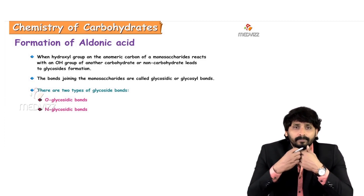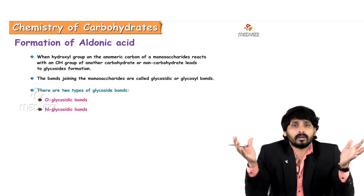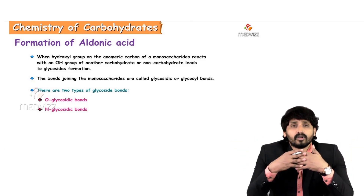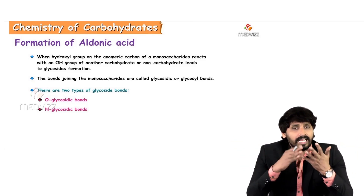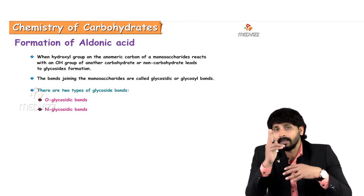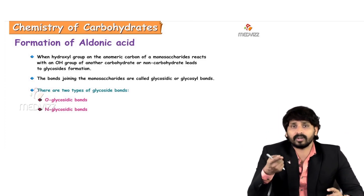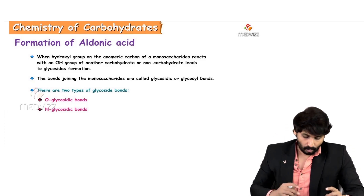Different types of glycosidic linkages occur to join different numbers of sugar units together in disaccharides and polysaccharides. There are two types of glycosidic bonds. I will first explain how a glycosidic bond is formed.